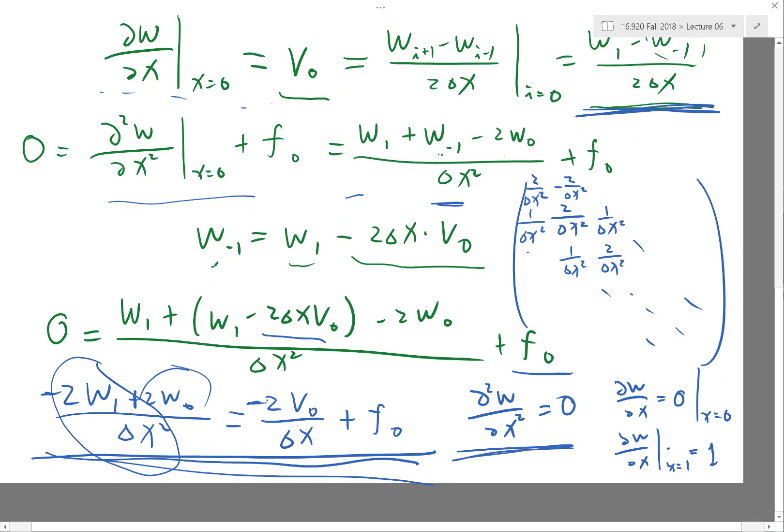Well, the second derivative being zero means I have a function with no curvature, right? It's a straight line. So how can a straight line have different slopes at x equal to zero and x equal to 1? It's impossible, right? So basically if you specify Newman boundary condition at both ends, you basically have an equation that has no solution most of the time.